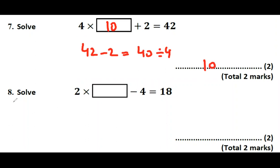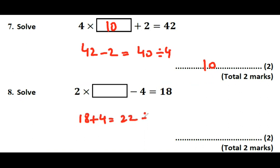Question number 8: A number times by 2, subtract 4 gives 18. The inverse of subtract 4 is add 4. So 18 add 4 gives 22. And the inverse of times by 2 is divided by 2. So 22 divided by 2 gives 11.